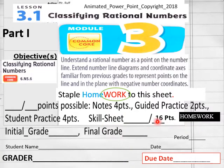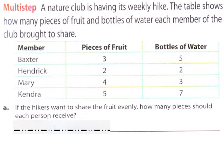Now we go into our homework. We got 16 points worth of homework. A nature club. Here's a good word problem with a table. Students reading from table and coming up with conclusions is a great exercise.